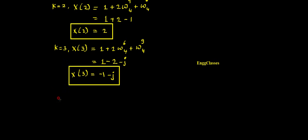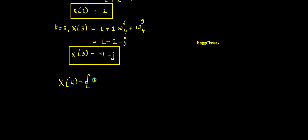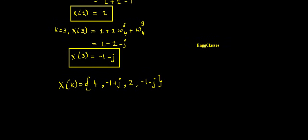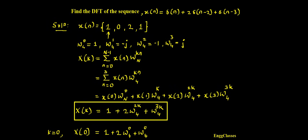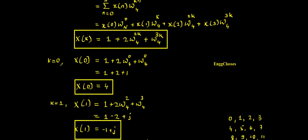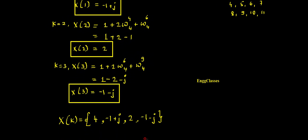Now I have found all four DFT coefficients. To summarize: X(k) = {4, −1+j, 2, −1−j} for k = 0, 1, 2, 3. These are the four DFT coefficients for the given sequence x(n). This is one of the simplest numericals in DSP using the concept of the Discrete Fourier Transform, explained step by step. I hope you have understood. If there are any doubts, please let me know in the comment section. Thank you so much for watching.